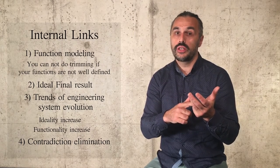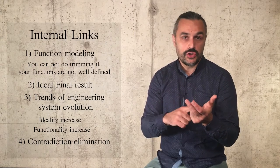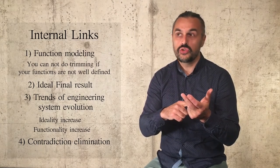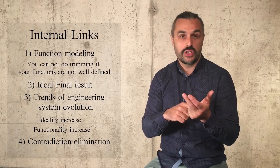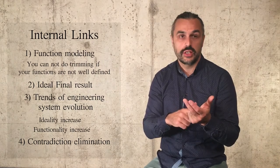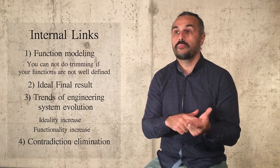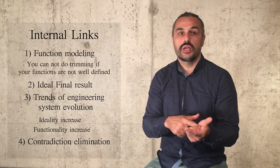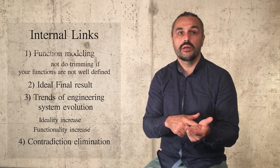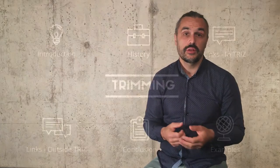These are the links of the trimming concept to other chapters of TRIZ. The most important are: functional modeling, trends of engineering system evolution — namely ideality increase, trend of dynamization or trend of functionality increase — and the ideal final result. And also contradiction analysis, because eliminating a contradiction is typically referred to as eliminating a physical element.